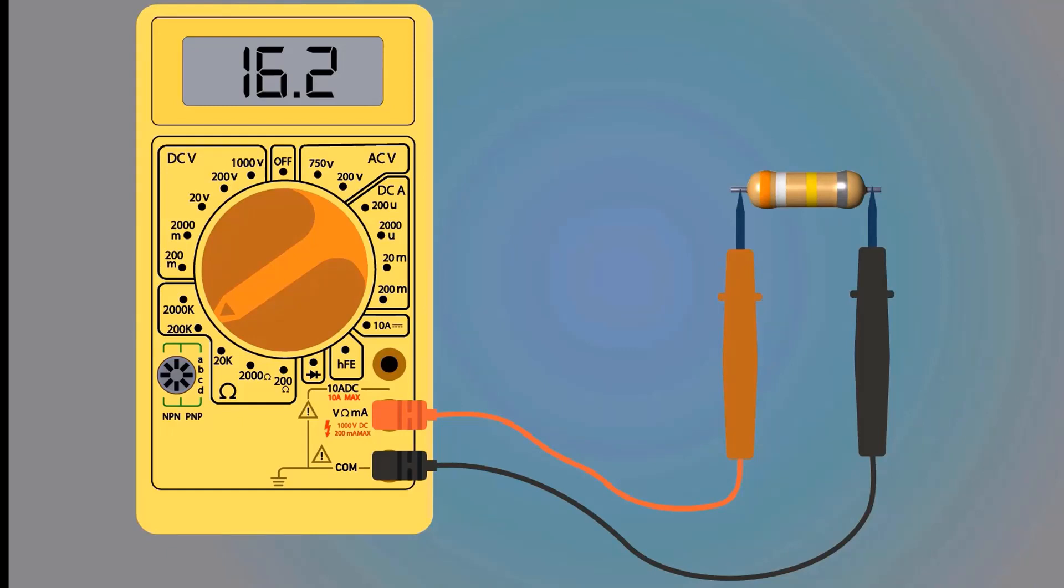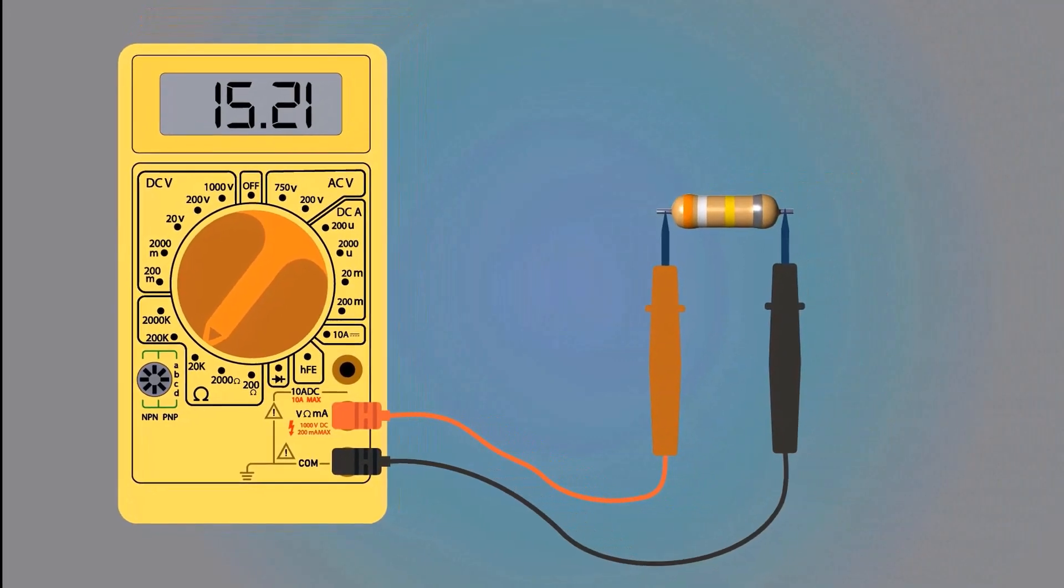For an accurate value we have to select the 20 kilo-ohm range with the selector switch. Now the display shows 15.21 kilo-ohms, which is the correct resistance value.